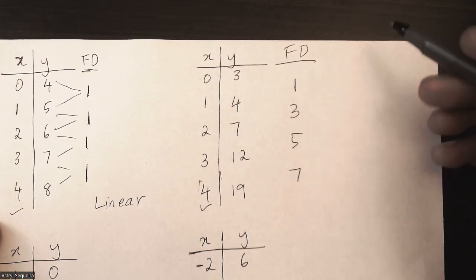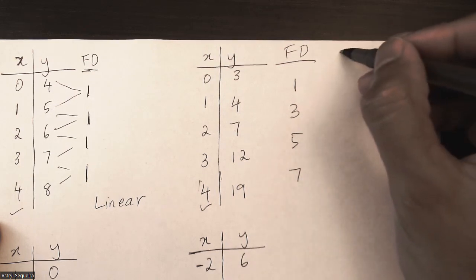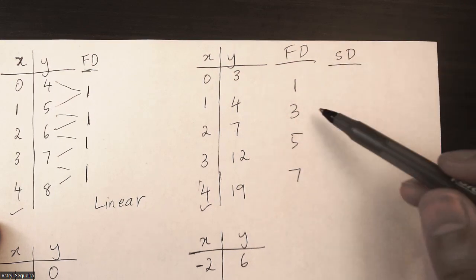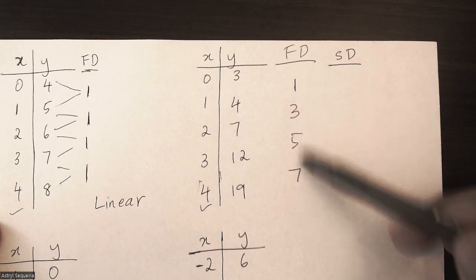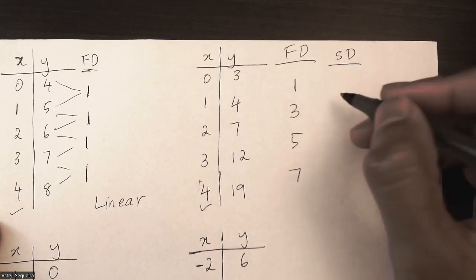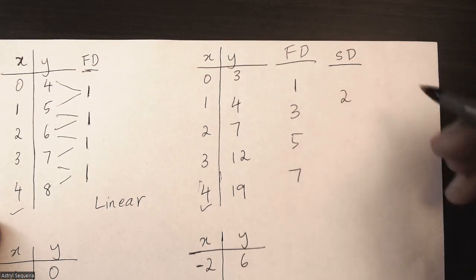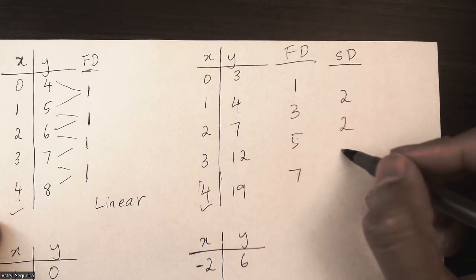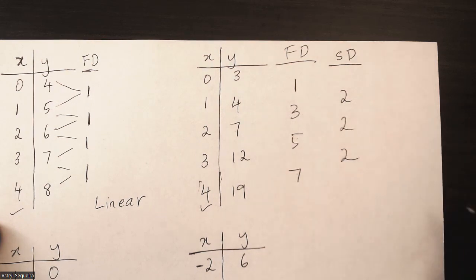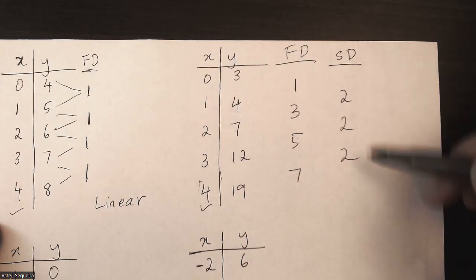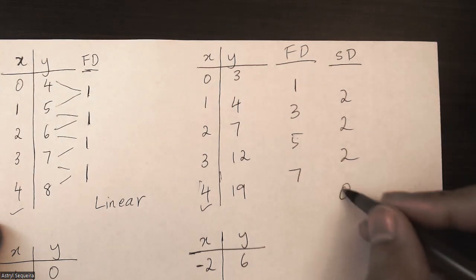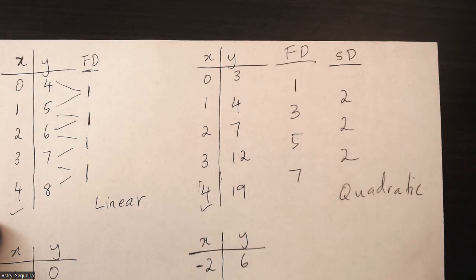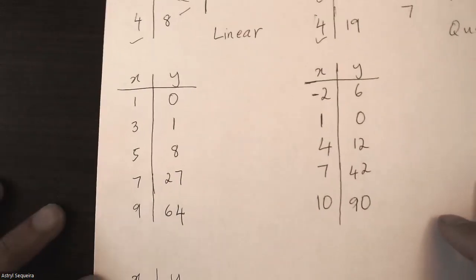Now I'll do my second differences using the first differences column. 3 minus 1 is 2, 5 minus 3 is 2, 7 minus 5 is 2. If your second differences are all the same, the equation is going to be quadratic.